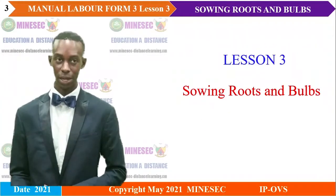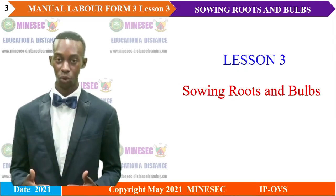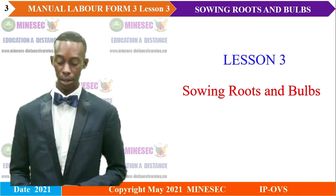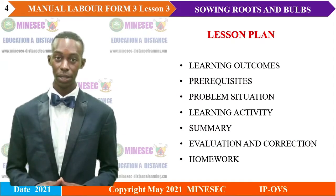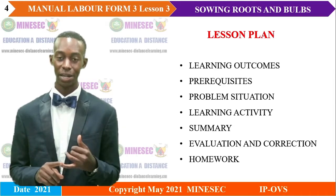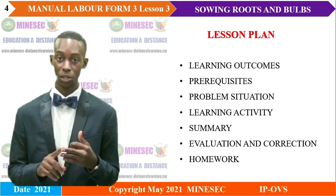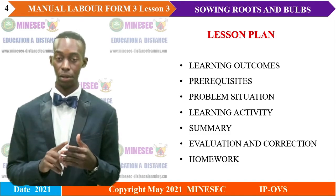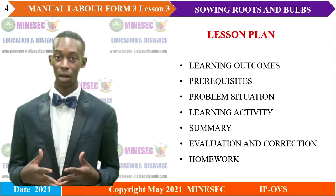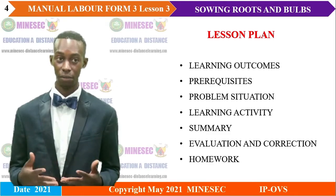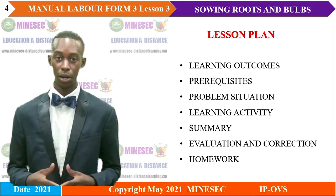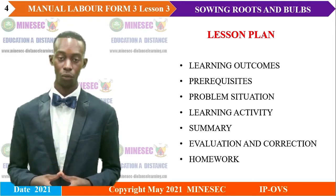Let's move now to the lesson proper. Today, we are going to continue with lesson 3, entitled: Sowing Roots and Bulbs. This lesson will be presented following this plan: the learning outcomes, followed by the prerequisites, then the problem situation, the learning activities, the summary, some evaluation questions and their corrections, and finally a homework assignment for the next lesson.